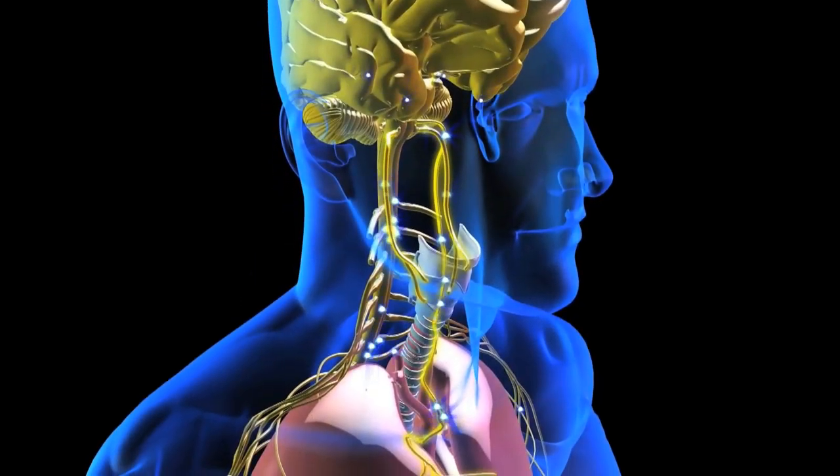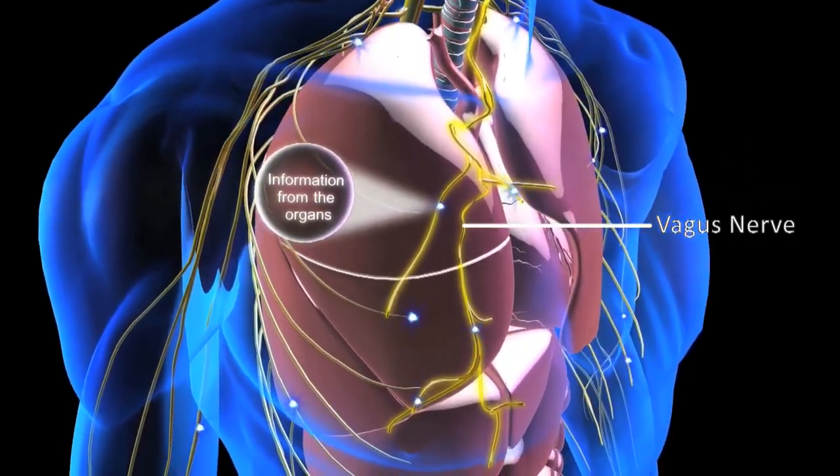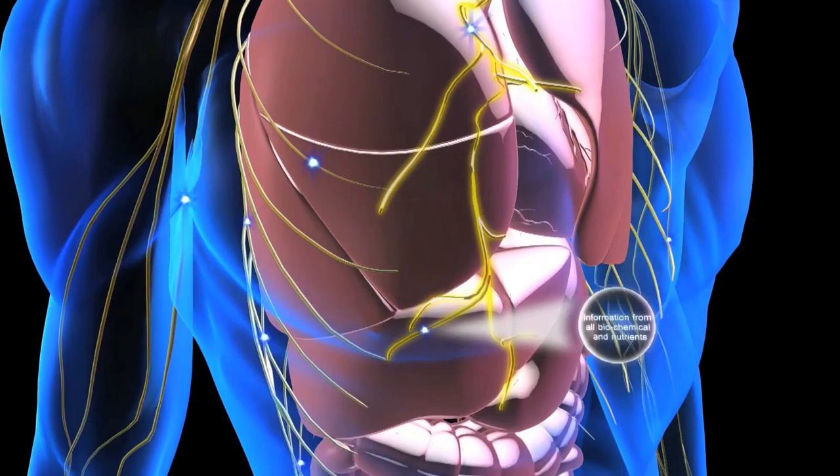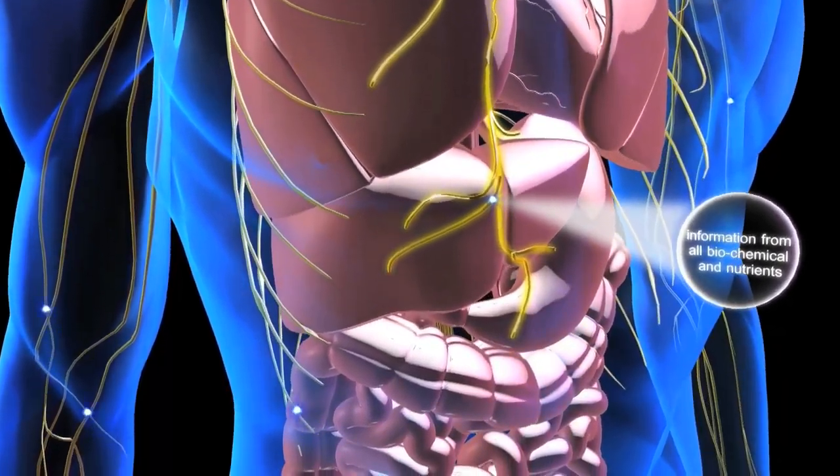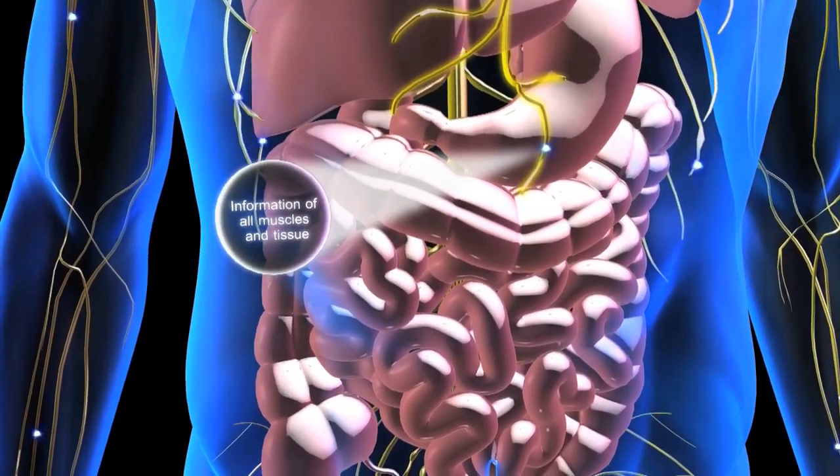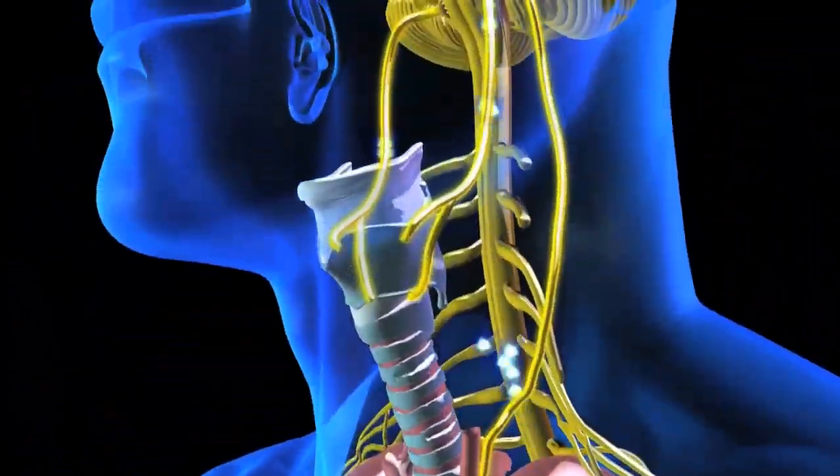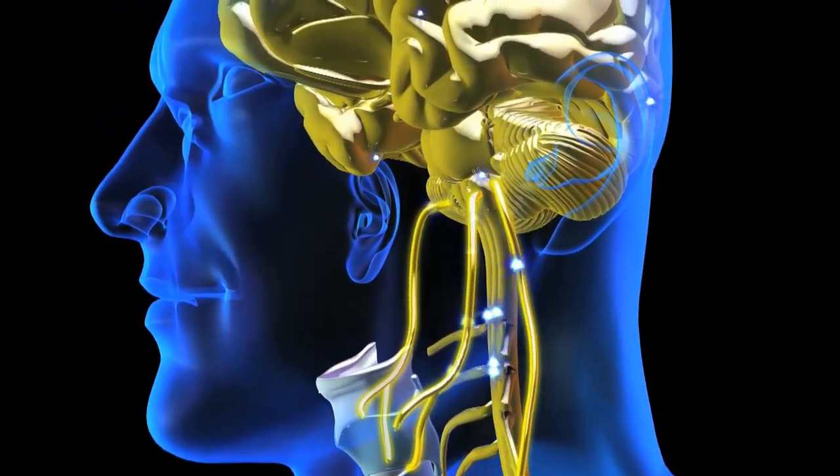Here's how it works. The vagus nerve is the longest and most complex of the cranial nerves with numerous branches connecting the brain, ears and larynx with all of the other organs. Its fibers communicate sensory, motor and nerve impulses which connects it to all the stimuli in the nervous system.